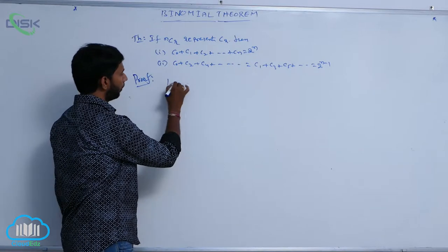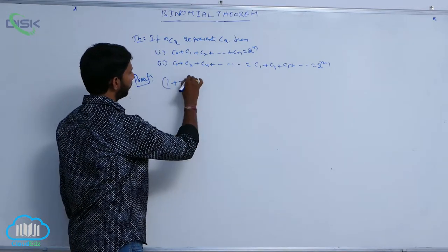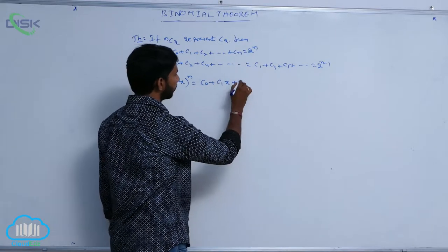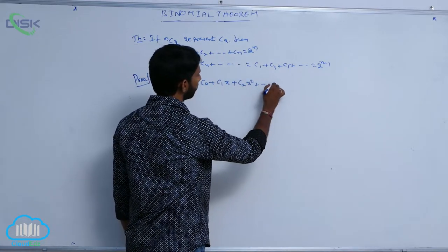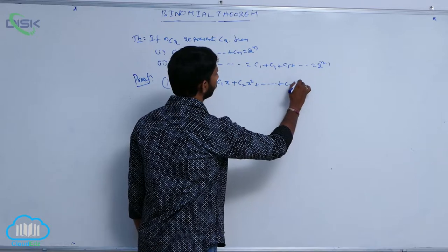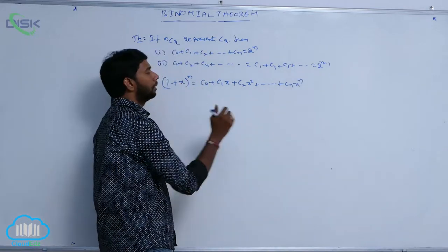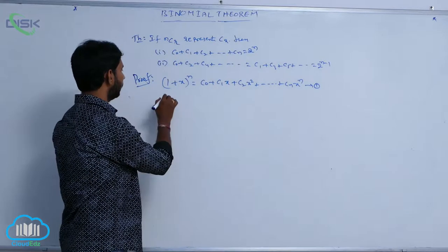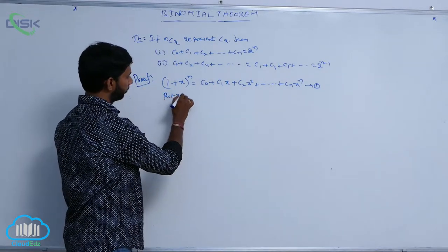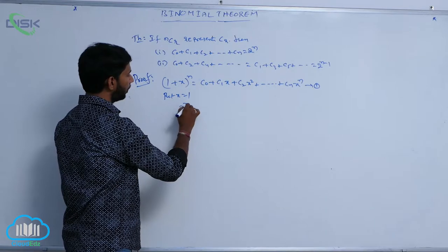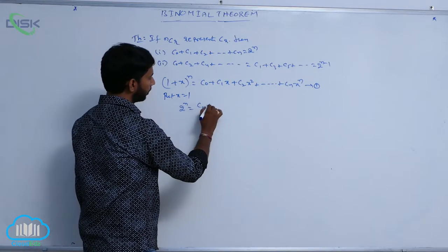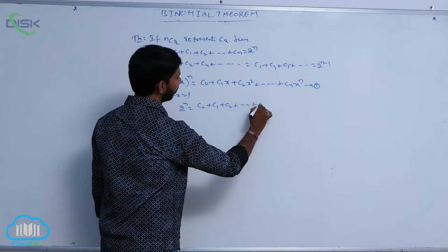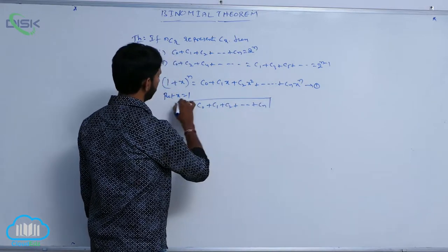You know the formula: (1 + x)ⁿ = C₀ + C₁x + C₂x² + ... + Cₙxⁿ. This is condition number 1. Put x = 1. That gives 2ⁿ = C₀ + C₁ + C₂ + ... + Cₙ. This is the first result.